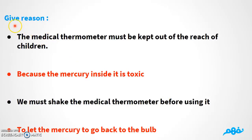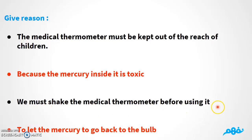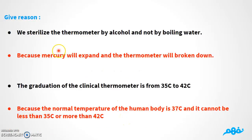Here are some important notes. First, the medical thermometer must be kept out of reach of children. Second, we must shake the medical thermometer before using it — we shake it to let the mercury go back to the bulb. Third, we sterilize the thermometer using alcohol, not boiling water. You can use alcohol, but not boiling water, because mercury will expand due to heat and the thermometer will break.